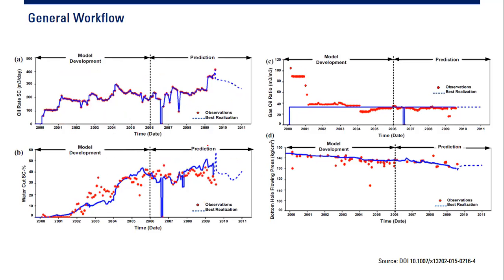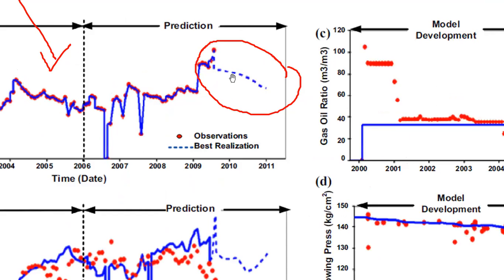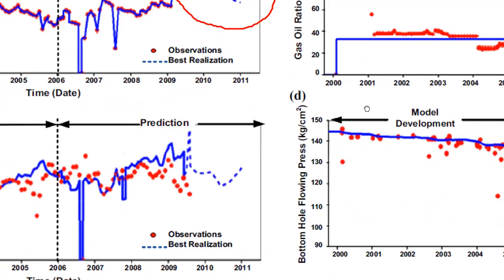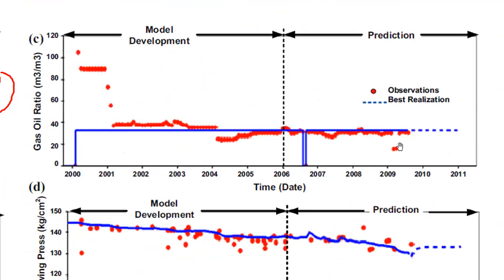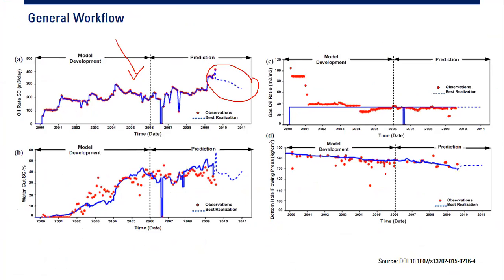First we get the history matching and then continue with prediction. You can see that the dashed line is the prediction — this is the prediction for GOR and this is the prediction for bottom hole flowing pressure. You need to achieve history matching first and then continue with prediction or forecast.